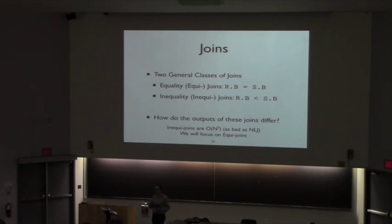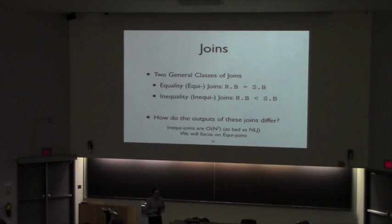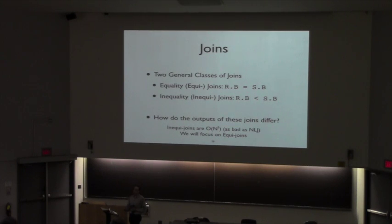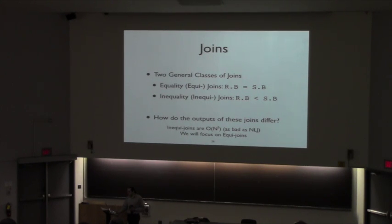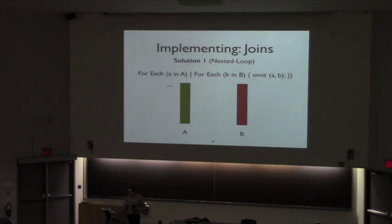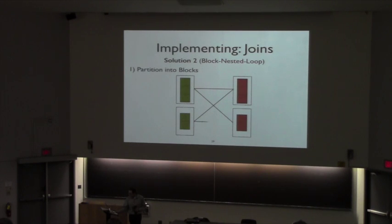Because equality joins tend to have much lower output arity, it makes a lot more sense to focus on optimizing equi joins. They're also the common case — if you look at TPC-H queries, there are practically no inequality joins. Equi joins are both extremely common and extremely amenable to optimization. We talked about nested loop join and block nested loop join last week. There's also an index nested loop join that uses material we haven't covered yet.